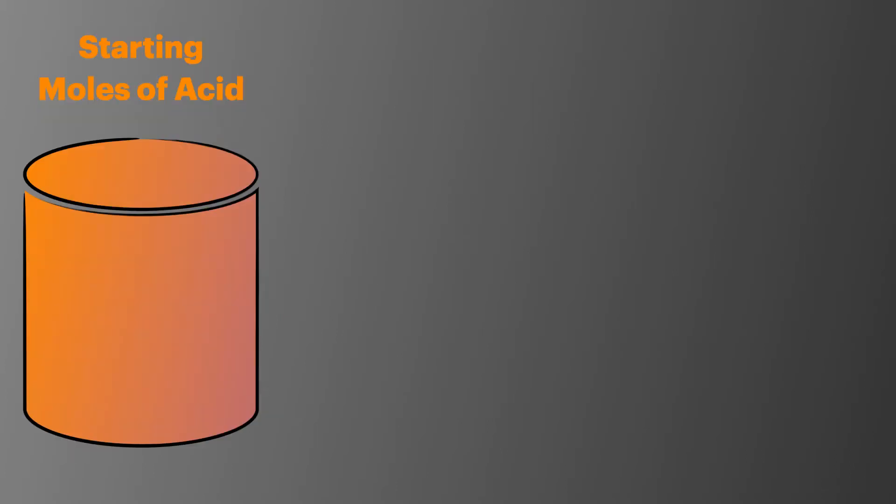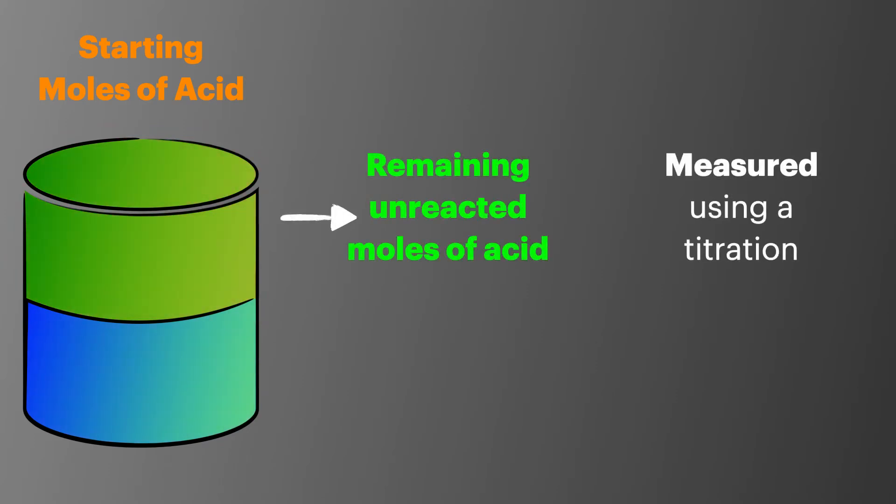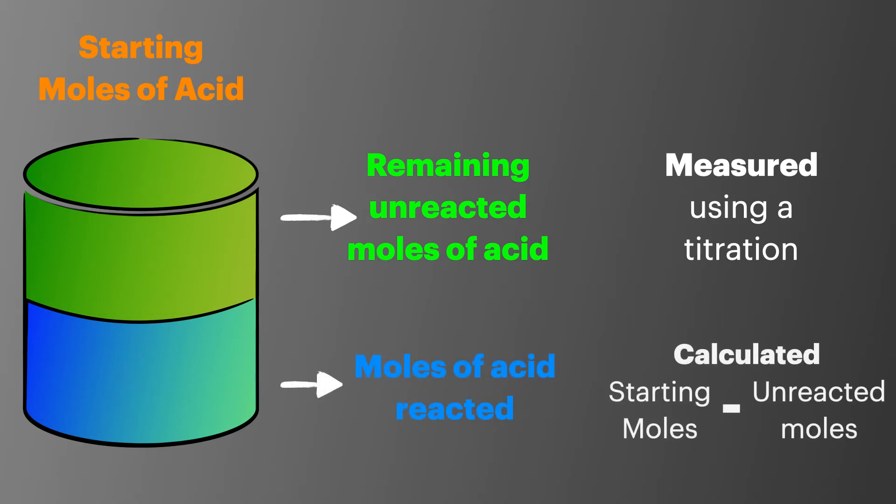So first off we'll calculate our moles of the starting acid. This will be made from stock solution and it's important that it's very accurate. It must also be in excess so that there'll be some acid left over after the reaction. We'll then carry out our neutralization reaction and then measure the unreacted moles of acid using a titration. All that's left to do is calculate the number of moles of acid that reacted by subtracting the unreacted moles from the starting moles.